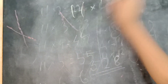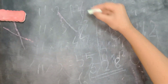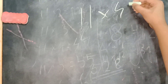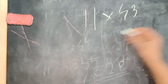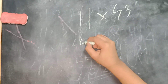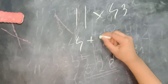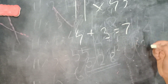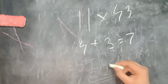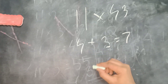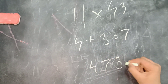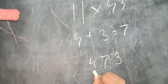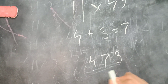Now I'm going to do 11 times 43. I'm going to separate again: 4 plus 3 equals 7. We keep the 7 in the middle, 4 on the side, 3 in the 1's place. So 3 is in the 1's place, 7 is in the 10's place, and 4 is in the 100's place — so the answer is 473.